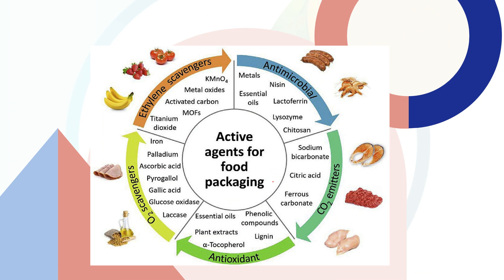Agents used in active packaging include carbon dioxide emitters — the released CO2 inhibits microorganisms and preserves food quality. For example, sodium bicarbonate acts as a good CO2 emitter; citric acid and percarbonates are also used. Antimicrobial agents retard spoilage by acting on microorganisms that degrade food products. Examples include metals, essential oils, potassium, polylysozymes, lysozymes, ceramic compounds, and lactoferins.